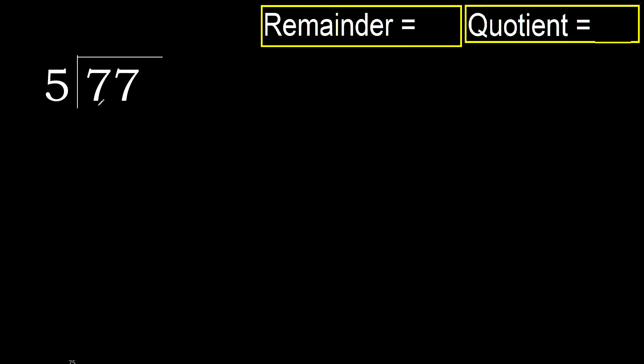77 divided by 5. 7 is not less, therefore with 7 — 5 multiplied by which number is nearest to 7 but not greater?